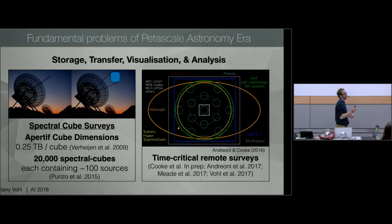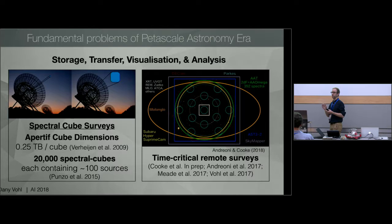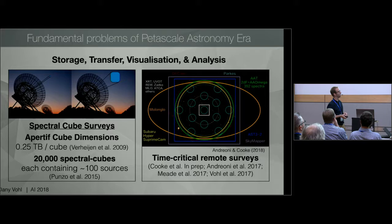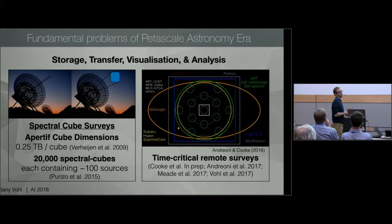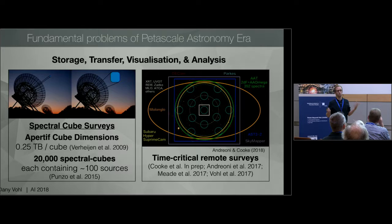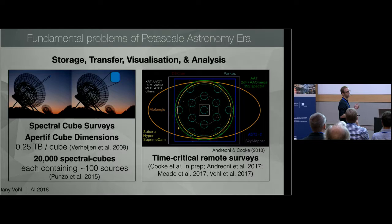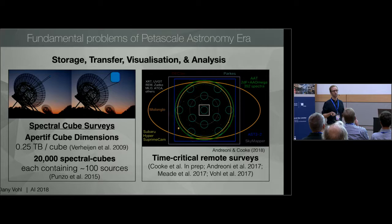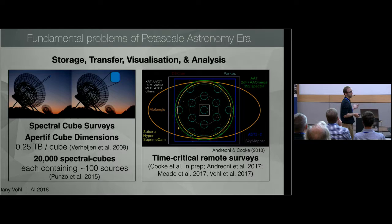Volume and velocity affect both practical parts like storage and transfer, and more philosophical aspects like visualization and analysis of data — how do you make sense of large collections of data? There's a lot of work being done on automated pipelines using machine learning, but that's only one part of the problem. For example, the Westerbork telescope was upgraded with new receivers allowing a wider field of view, but this comes with the impact of dealing with lots and lots of data.